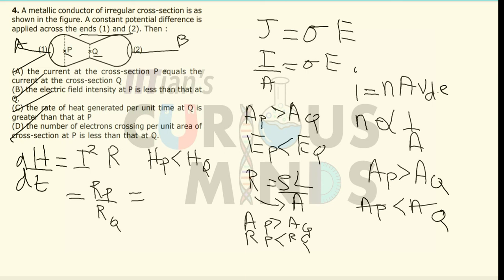The number of electrons crossing per unit area of cross-section P is less than that of Q. So in this question, all four options are correct.